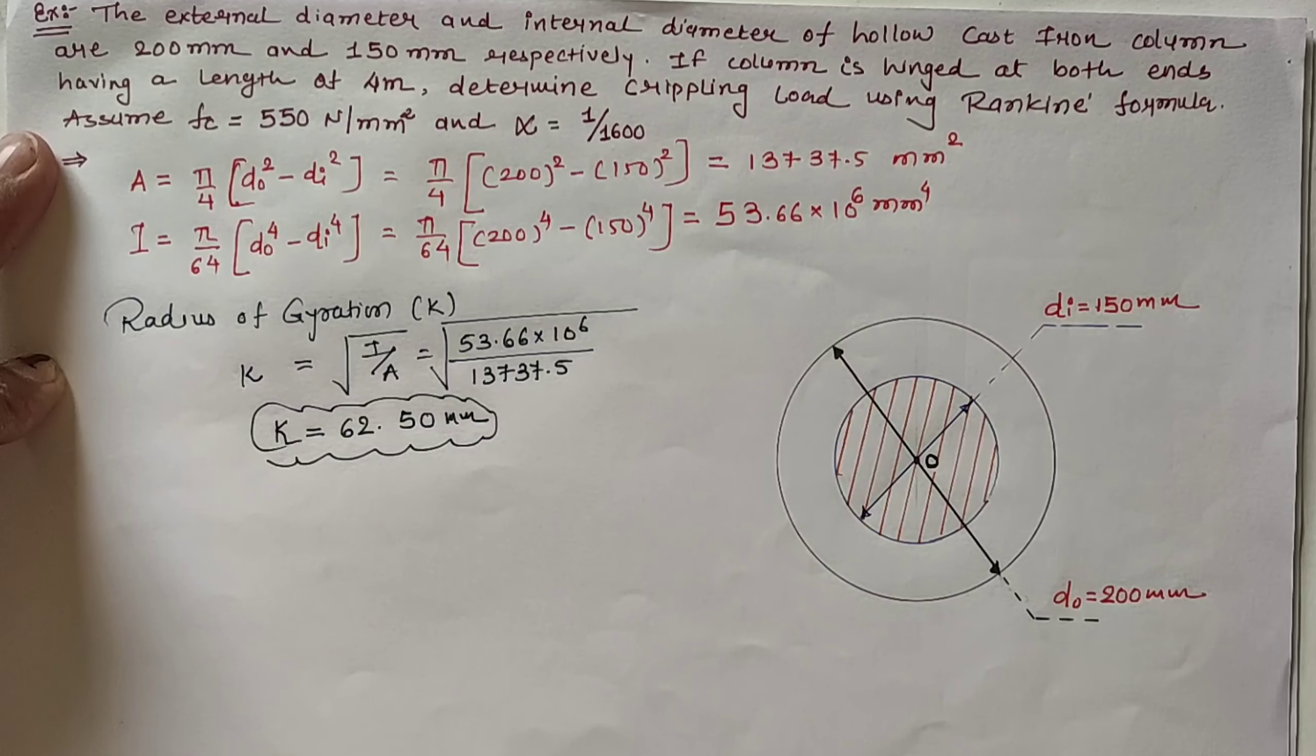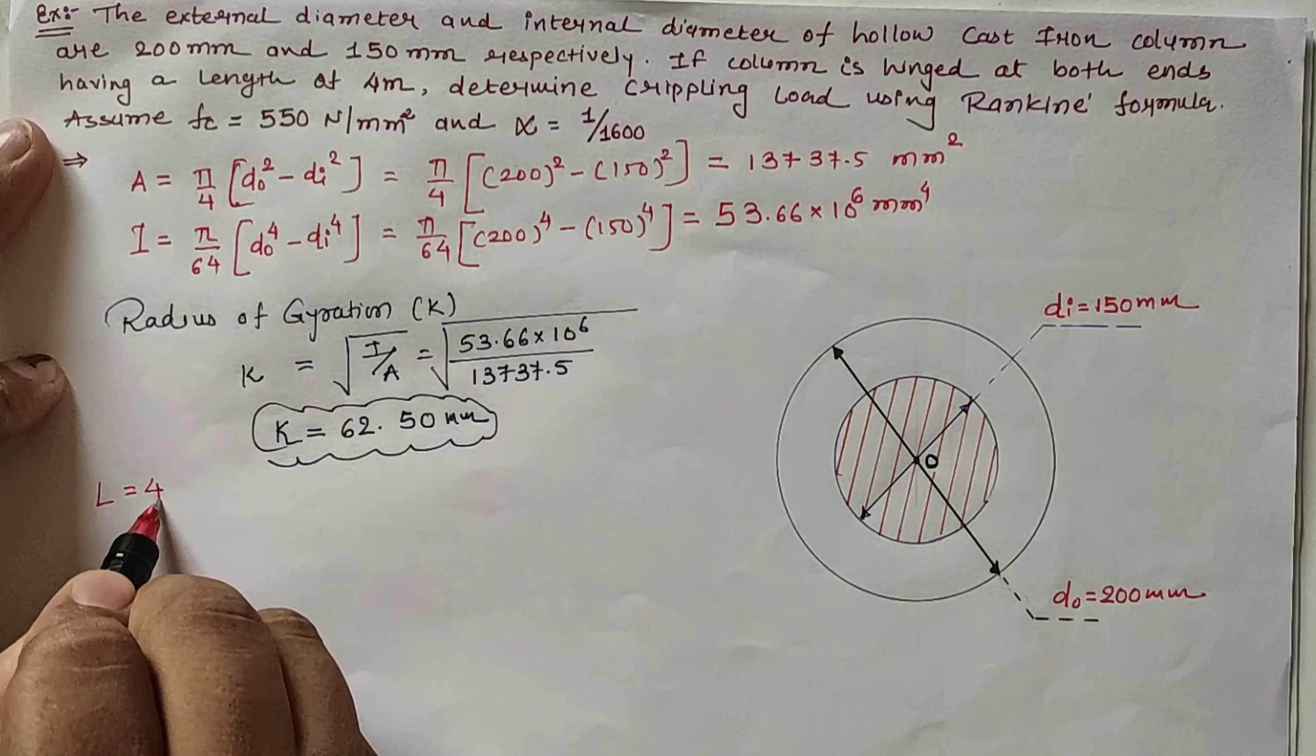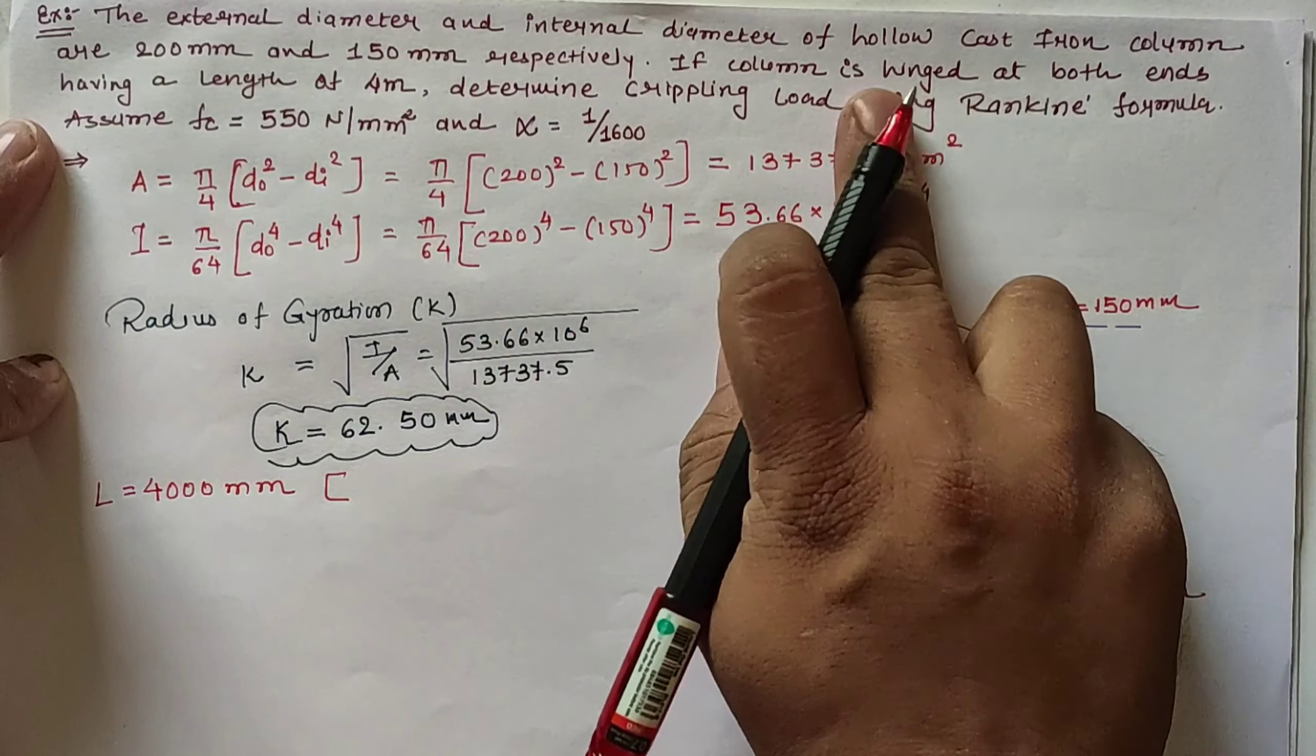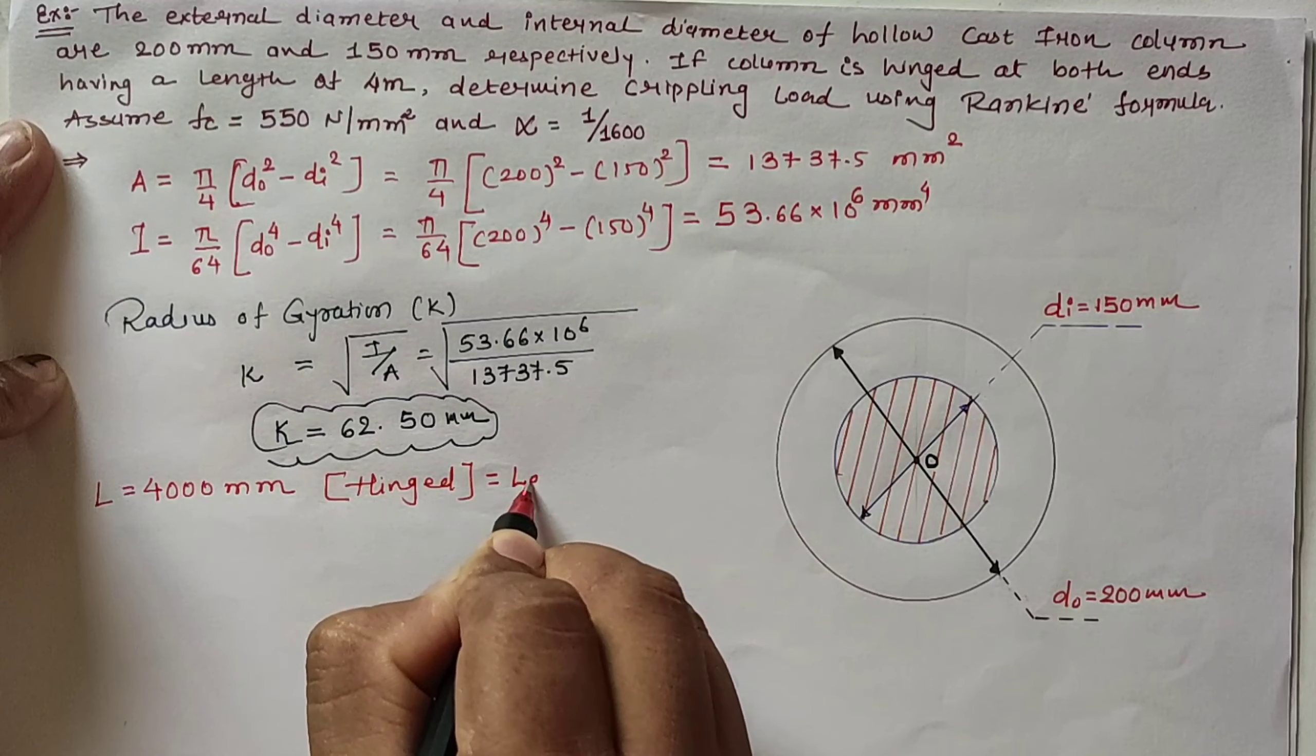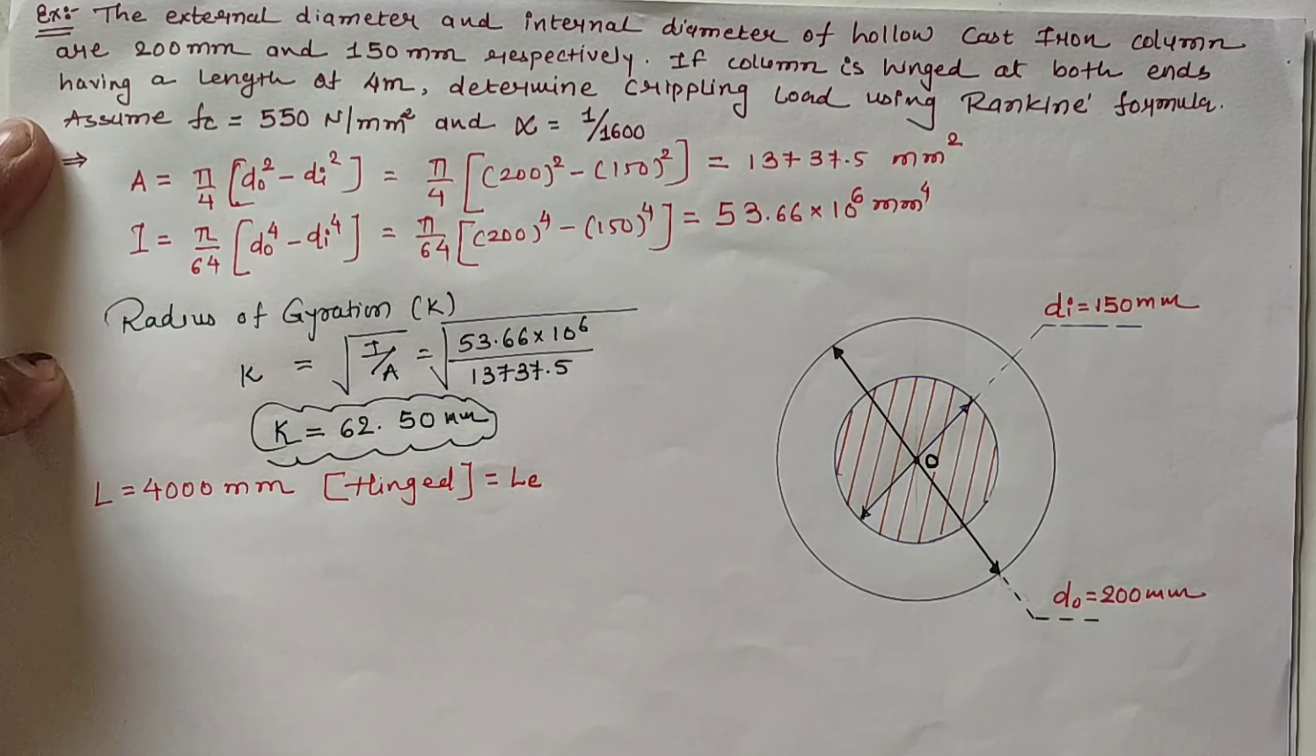Going ahead for the effective length, we have given length of 4 meters, meaning L = 4000mm with both ends hinged. For hinged condition, the effective length equals the original length of 4000mm.